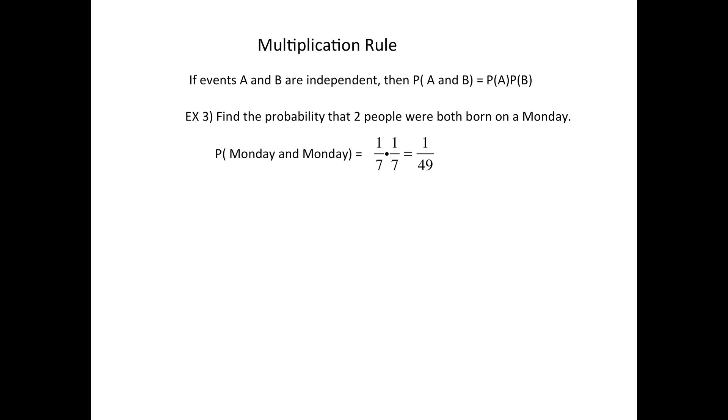Just because one person was born on a Monday, that does not have any effect on the other randomly chosen person. So the chances of a Monday are one in seven, the AND turns to multiplication, the second Monday is a one in seven. So that's one out of 49.